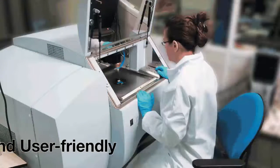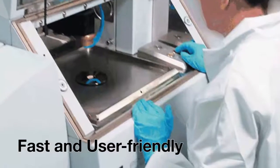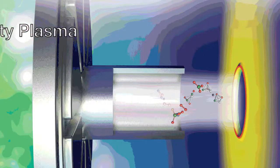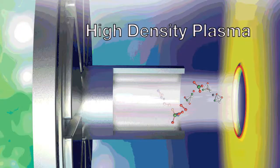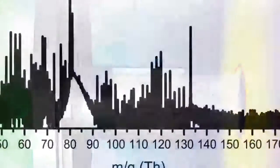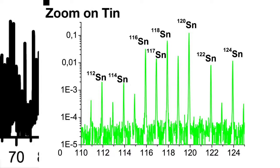PPTOF-MS is a very fast and user-friendly depth profiling tool. First, the sample doesn't need to be transferred into a UHV chamber. Second, the glow discharge is a high-density plasma yielding erosion rates as high as several tens of nanometers per second. And third, the mass analyzer is ultra-fast and non-sequential.